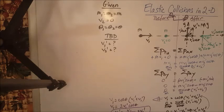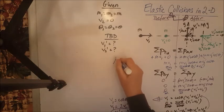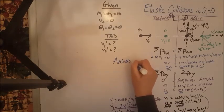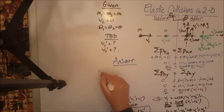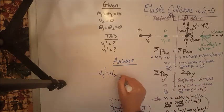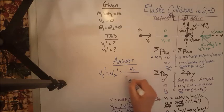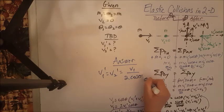That is our answer. So once again, the answer to this problem, let me write it here one more time to make sure that is visible in the video. V1 prime equals V2 prime and equals V1 over 2 cosine theta.